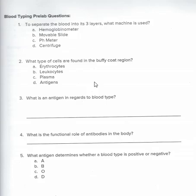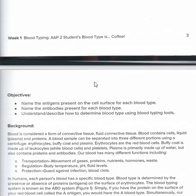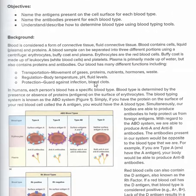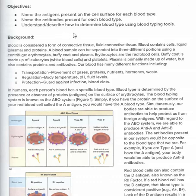From now on you can just go in and do the pre-lab questions as multiple choice, which will make life easier on both of us. The objectives are to learn about blood typing — you need to know what antigens are, you need to know what antibodies are, and you need to be able to determine blood type.